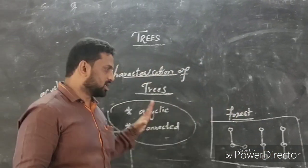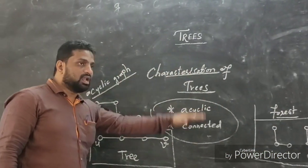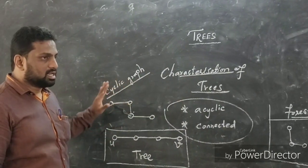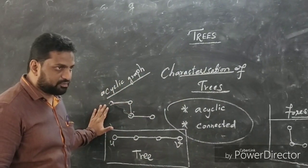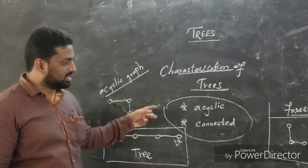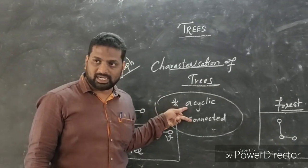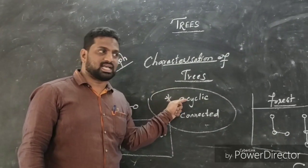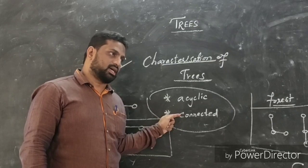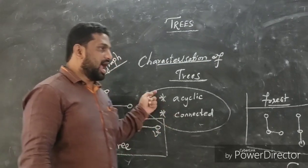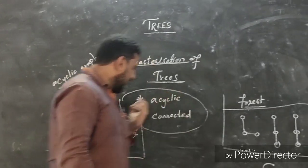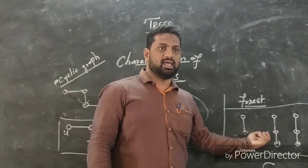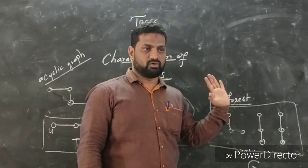So far, what we have learned in the characterization is the definition of a tree. In this definition of a tree, we need two conditions to be satisfied: one is acyclic, another one is connected. And if we have more than one tree, then it is called a forest.